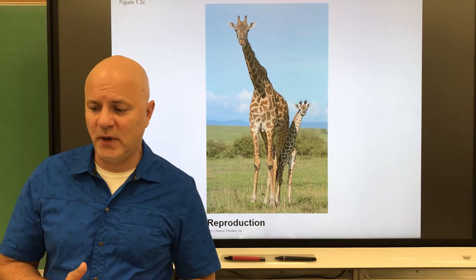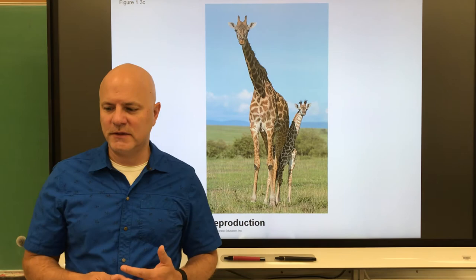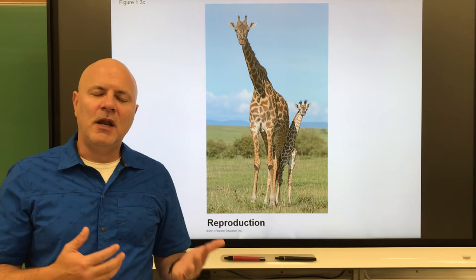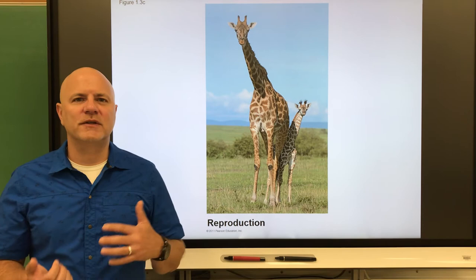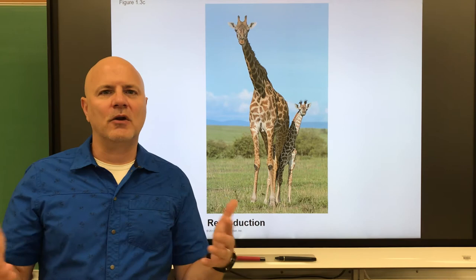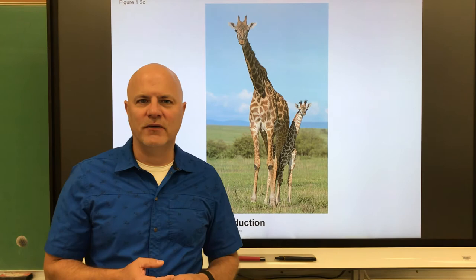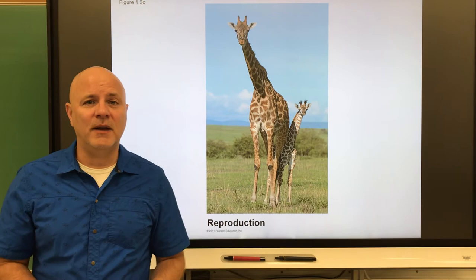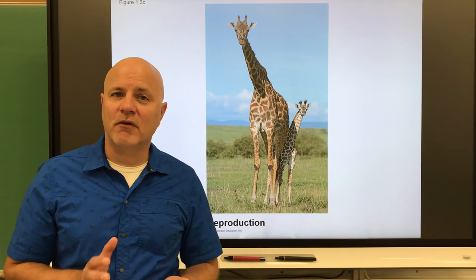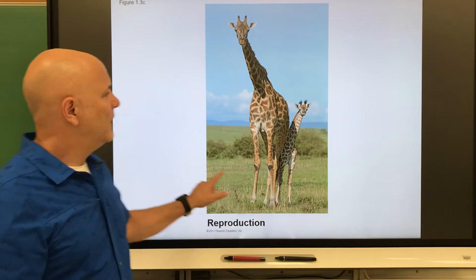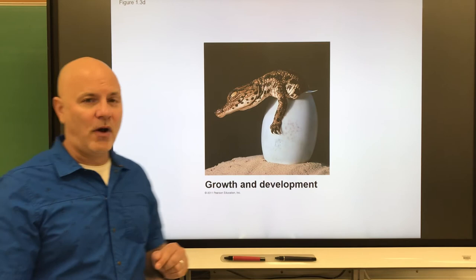Sexual reproduction — which we see in giraffes and in ourselves — is the creation of offspring by the fusion of gametes, egg and sperm cells. Offspring are similar to each other but not exactly the same, and similar to the parents but not exactly like either parent. This is beneficial in a changing environment — if offspring are a little different and the environment changes, hopefully some survive. A downside is you have to find a mate, though some organisms like plants and tapeworms can sexually reproduce with themselves.